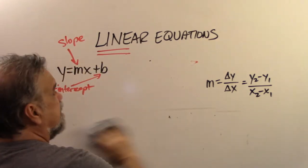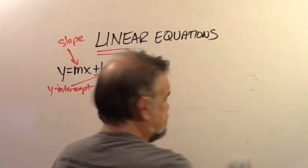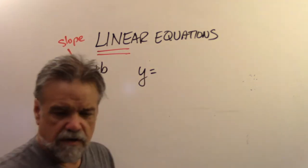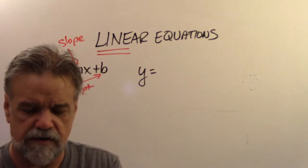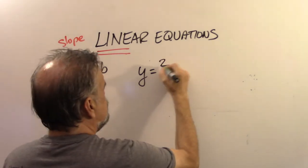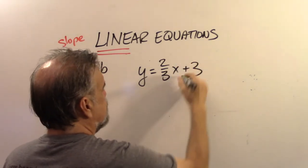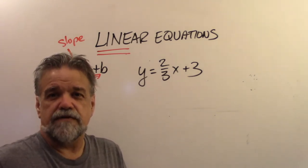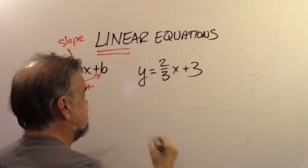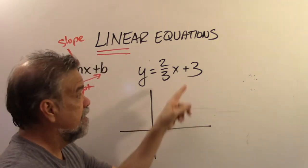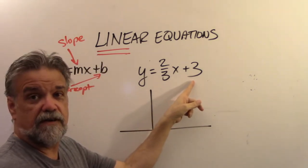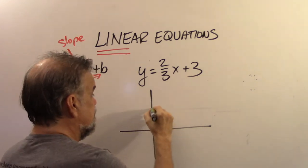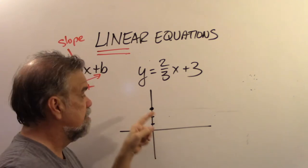Let's say I have an equation written in slope-intercept form — for example, y equals 2/3 x plus 3. How do I graph this? It's easy — start with the y-intercept. b always gives you the value of y on your y-intercept. So 1, 2, 3 — this line goes through that point right there.